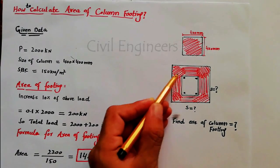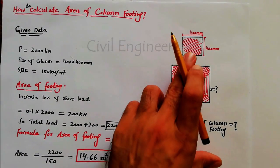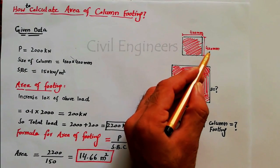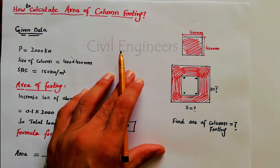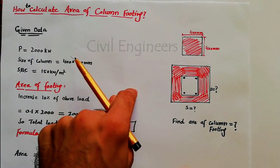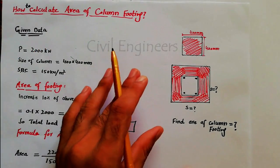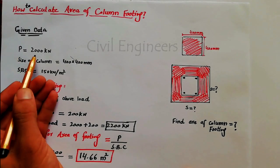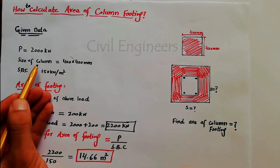We will find the area of footing for a column with size 400mm by 400mm. If this video is helpful, please like, share, and subscribe for more update videos. In our given data, we have to find the area of column footing for a load of 2000 kilonewtons, so P is equal to 2000 kilonewtons.